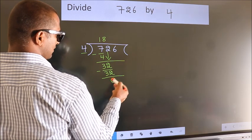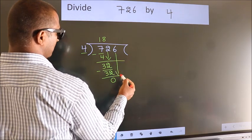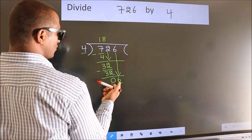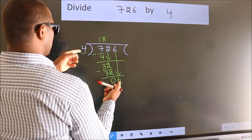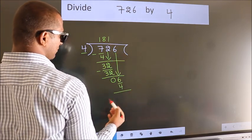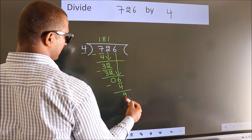After this, bring down the beside number. So 6 down. So 6. A number close to 6 in the 4 table is 4 once, 4. Now we subtract. We get 2.